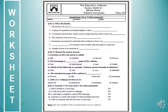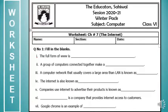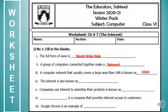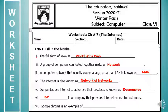Here is a worksheet from your winter pack for chapter seven — the internet. Please solve it and paste it on your computer notebooks. Answer key: the full form of WWW is World Wide Web; a group of computers connected together make a network; a network covering a large area is a MAN (Metropolitan Area Network); the internet is also known as Network of Networks; companies use the internet to advertise via e-commerce; ISP (Internet Service Provider) provides internet access; Google Chrome is an example of a web browser.